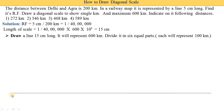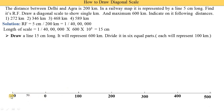We draw a line from 0 to 15 centimeters, and this 15-centimeter length represents 600 kilometers. We divide it into 6 equal parts so each part represents 100 kilometers. We divide into 6 equal parts because 600 divided by 6 gives 100 kilometers per part. The first part is used to indicate subdivided units.